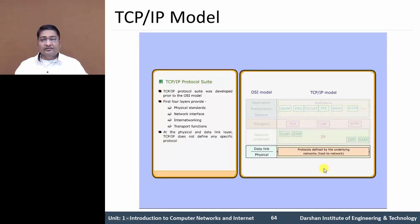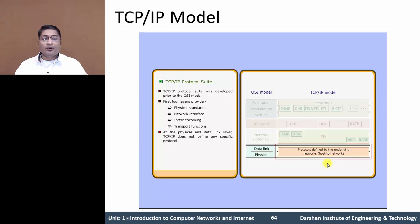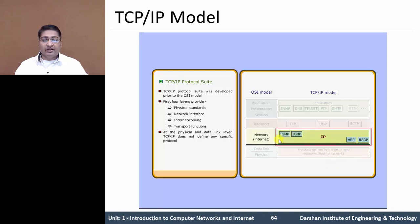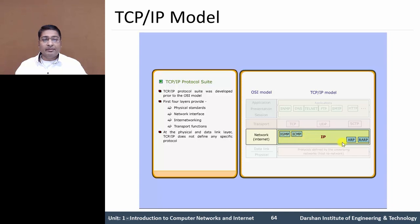At the Physical Layer and Data Link Layer, TCP doesn't define any specific protocol but it supports all standards and proprietary standards. In the second layer, the Network Layer provides and supports four protocols: IGMP, ICMP, ARP, and RARP.